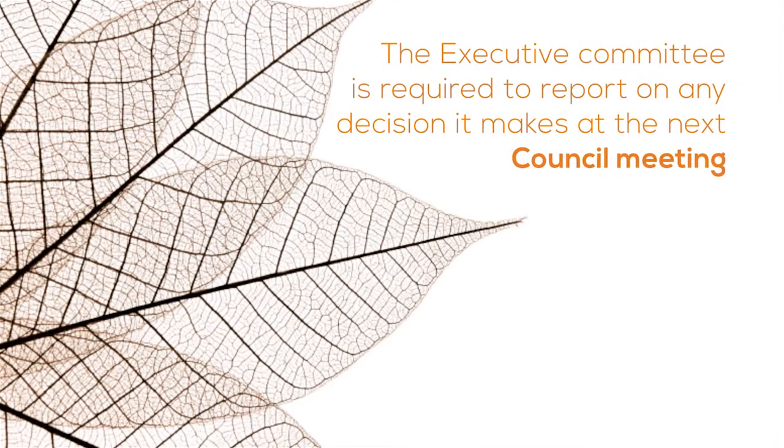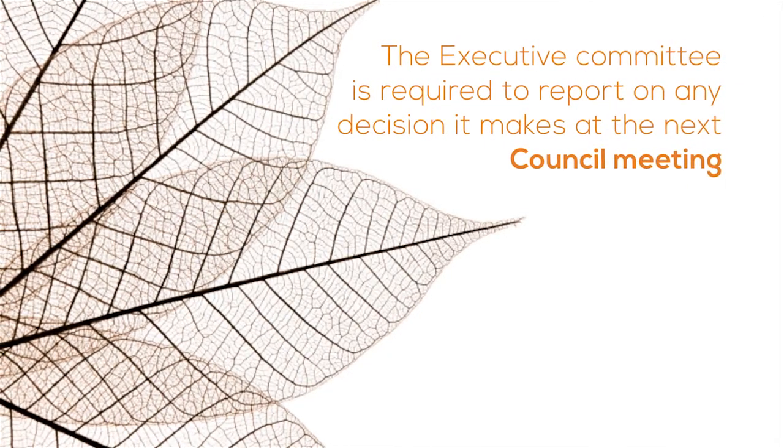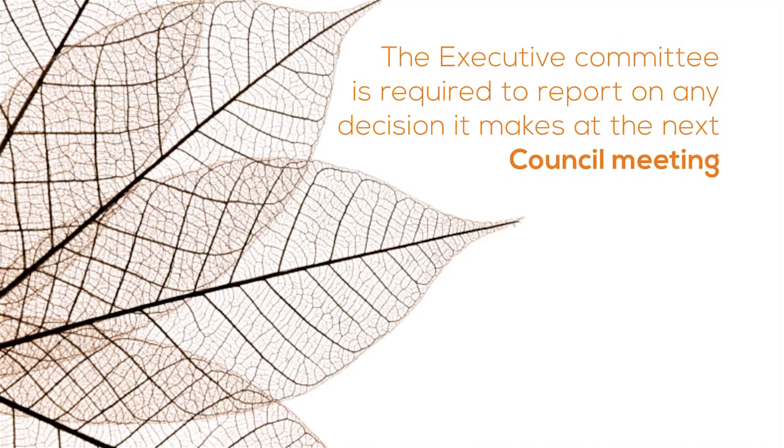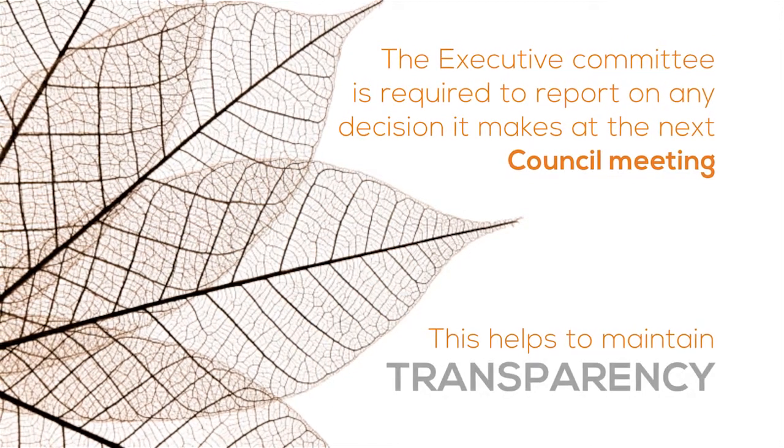Because councils typically only meet three or four times each year, and issues may arise in the interim that require direction, the RHPA also establishes an executive committee that has the authority to exercise many of the council's powers between council meetings. The executive committee cannot make decisions respecting regulations or bylaws. The executive committee is required to report on any decision it makes at the next council meeting, which helps to maintain transparency.